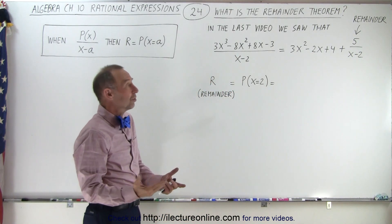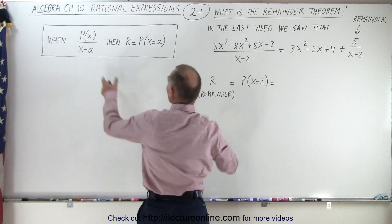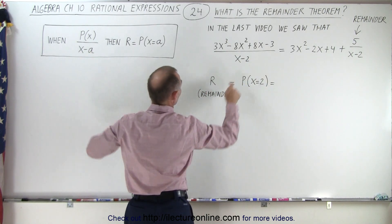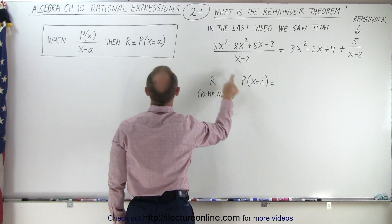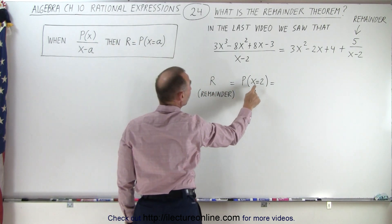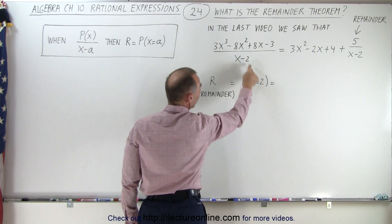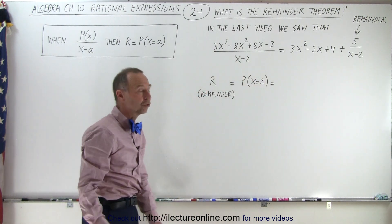So that tells us that if we have a polynomial divided by something that looks like this, where a is just a constant, then we can find the remainder by simply evaluating our polynomial for the value x equals that constant, which in this case is 2.